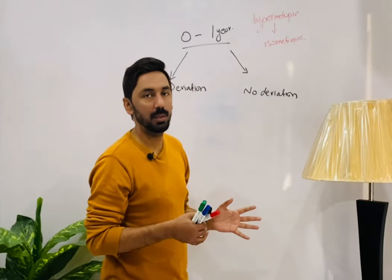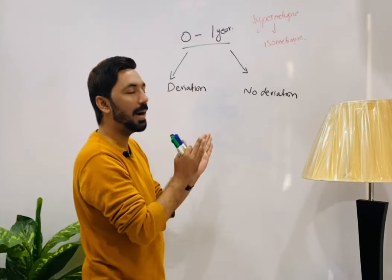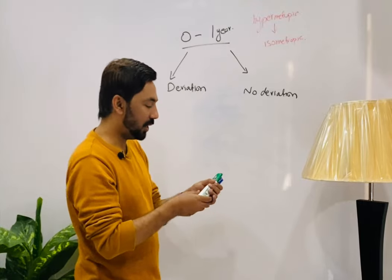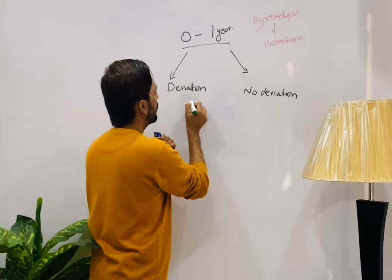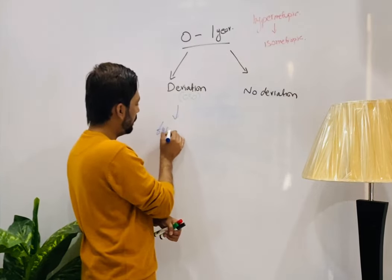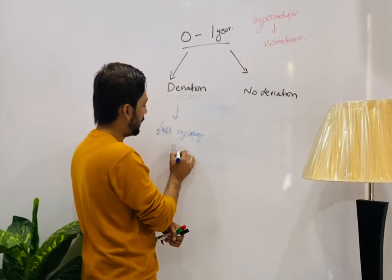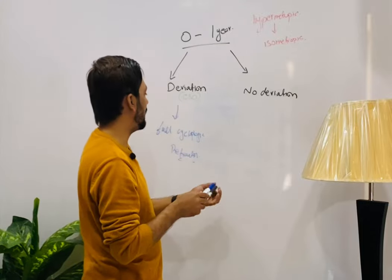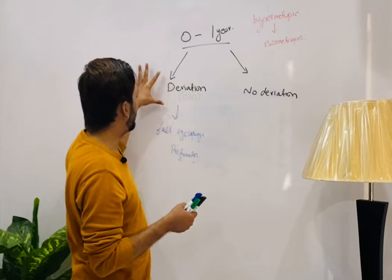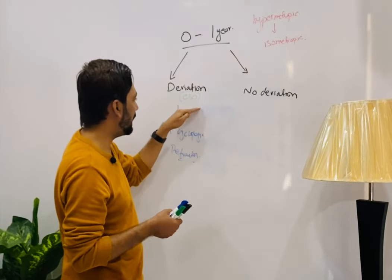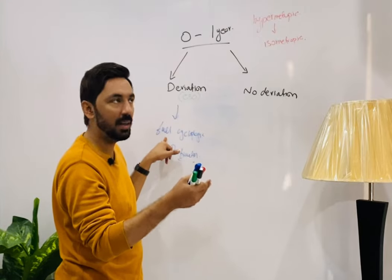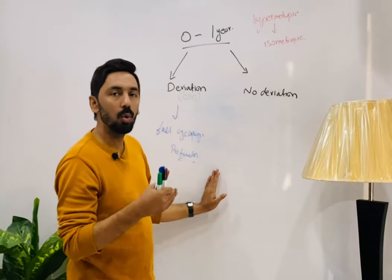If you find isometropic hypermetropia and the patient has deviation — and the deviation is esotropia — then you will prescribe full cycloplegic refraction. You will instill cyclopentolate drops in the patient's eyes to paralyze accommodation, then prescribe the full correction after that, to avoid any deviation.